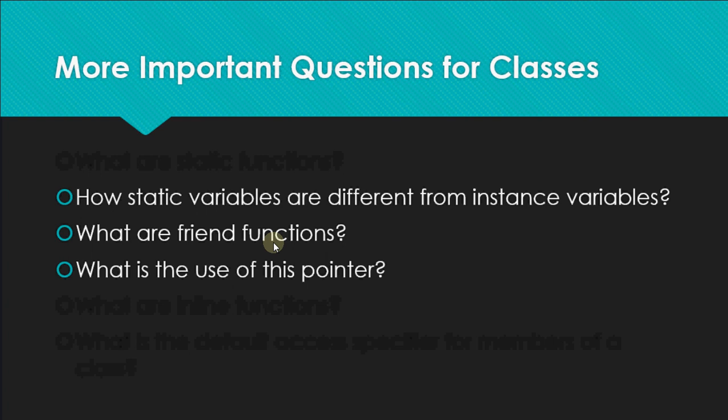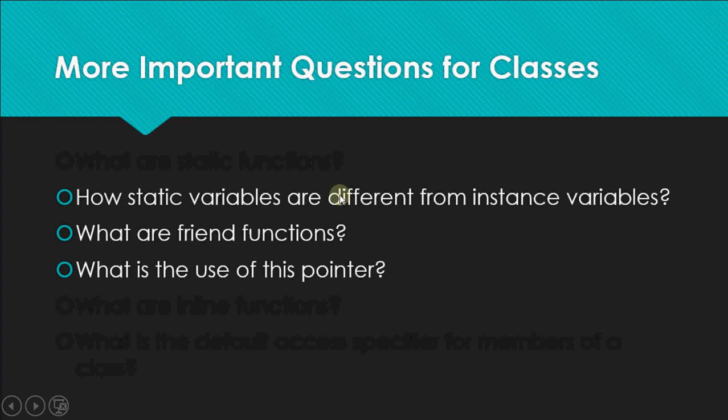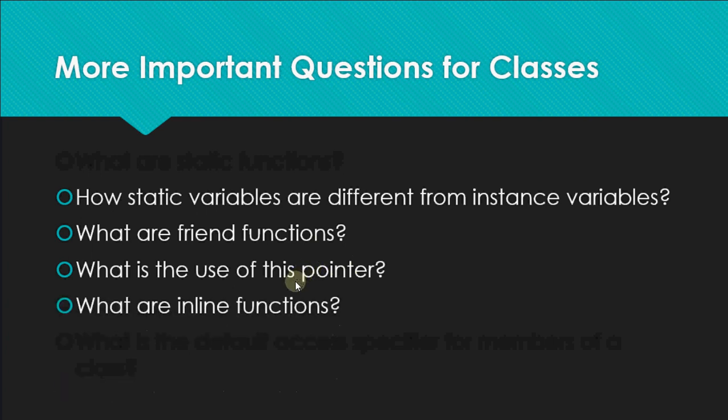Similarly, when b.input() is called, the address of 'b' goes into the 'this' pointer and data is stored at the address of 'b'. So basically, the 'this' pointer stores the address of the object with which you have the dot operator — the object for which the function is being called — so that memory is processed for that particular object.